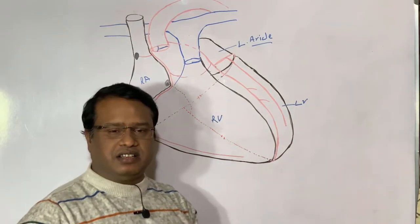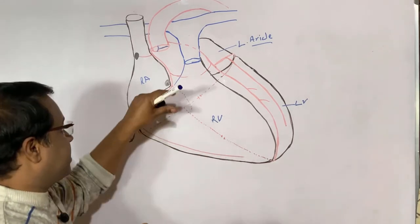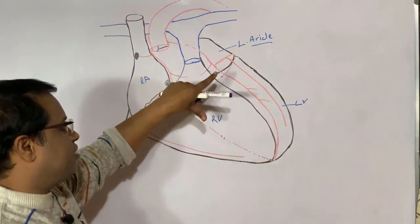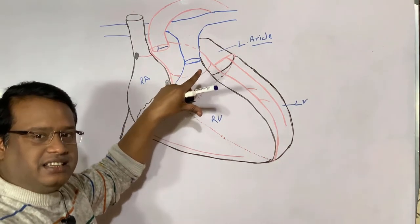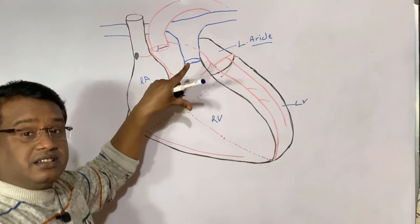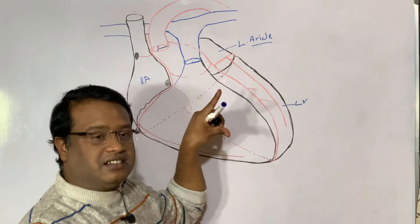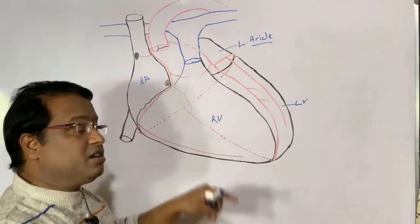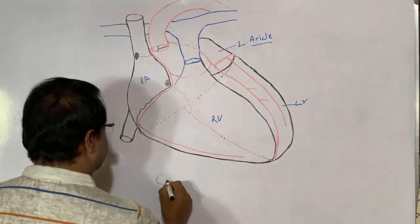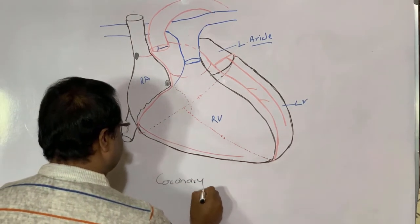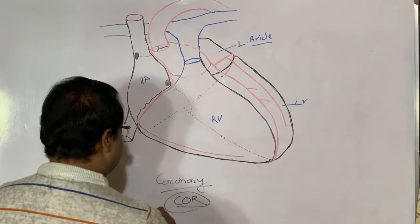From today's discussion you are gaining the key points of artery supply or coronary circulation of the heart. After seeing the discussion I think you will be able to understand very easily the major coronary circulation. The word 'coronary' — C-O-R-O-N-A-R-Y — the word 'cor' is a Latin word, and the term coronary is in adjective form.